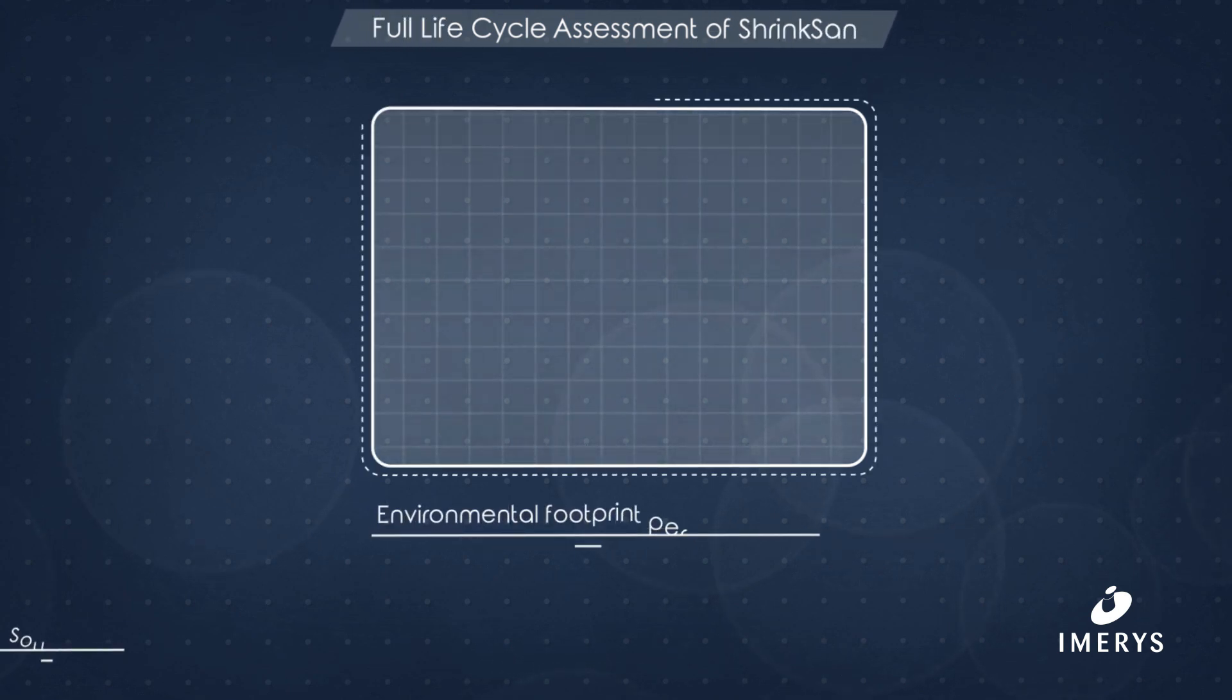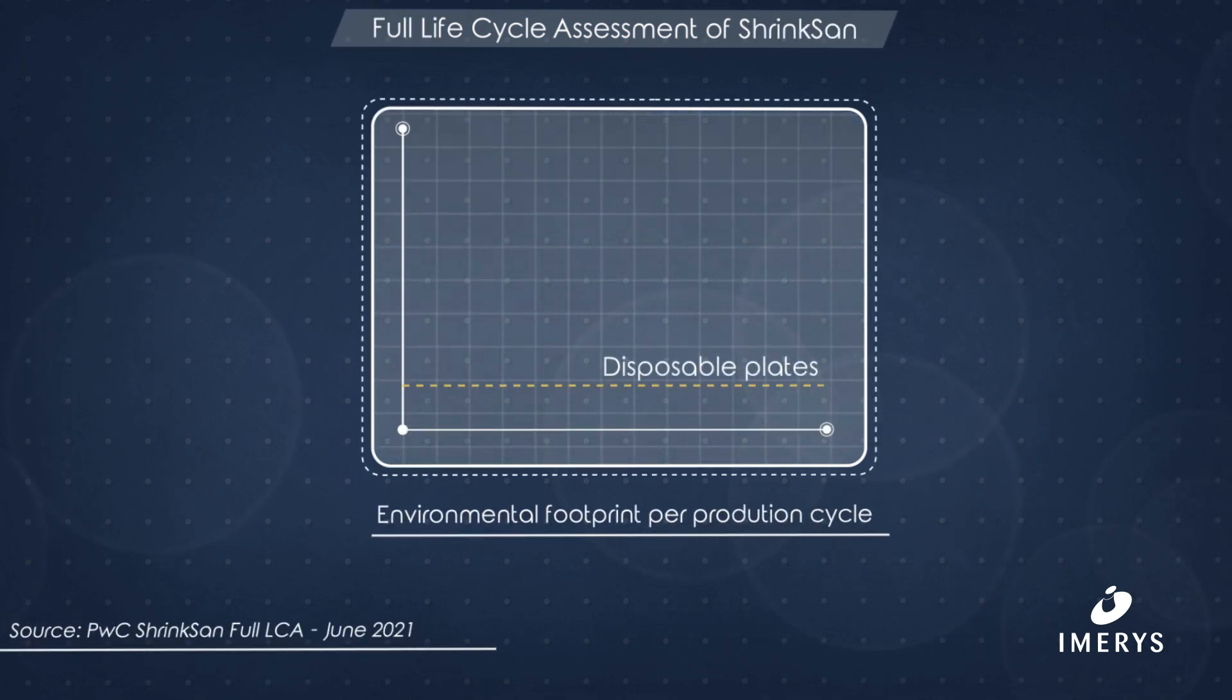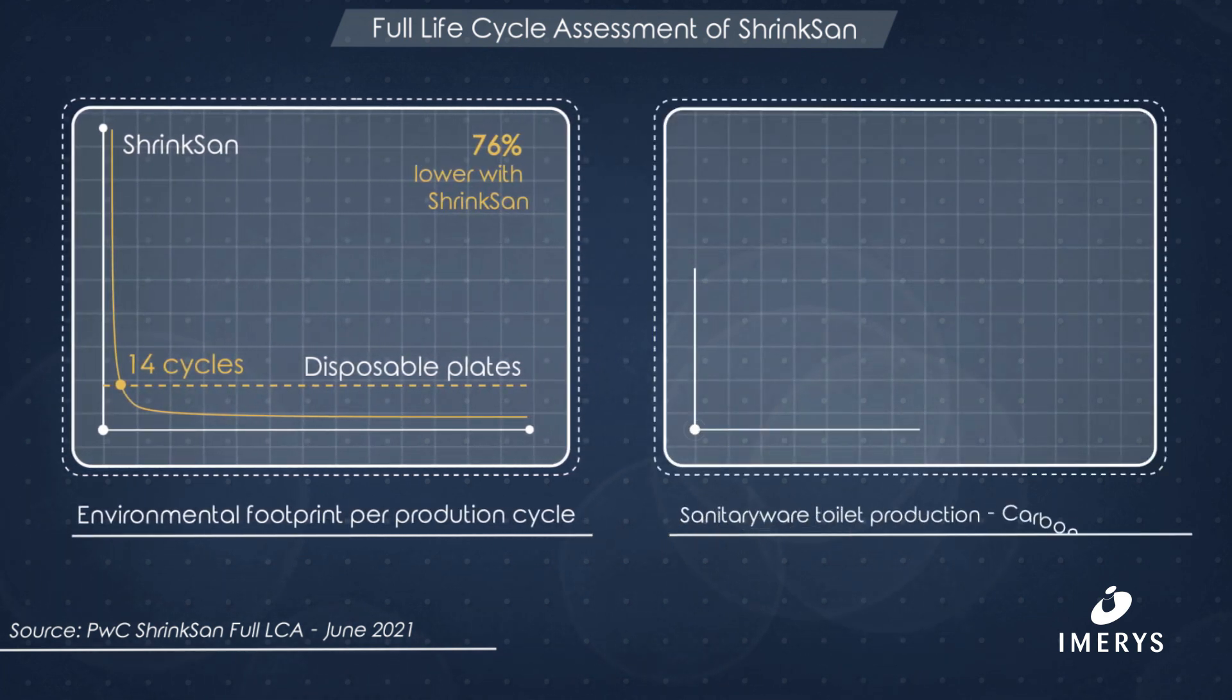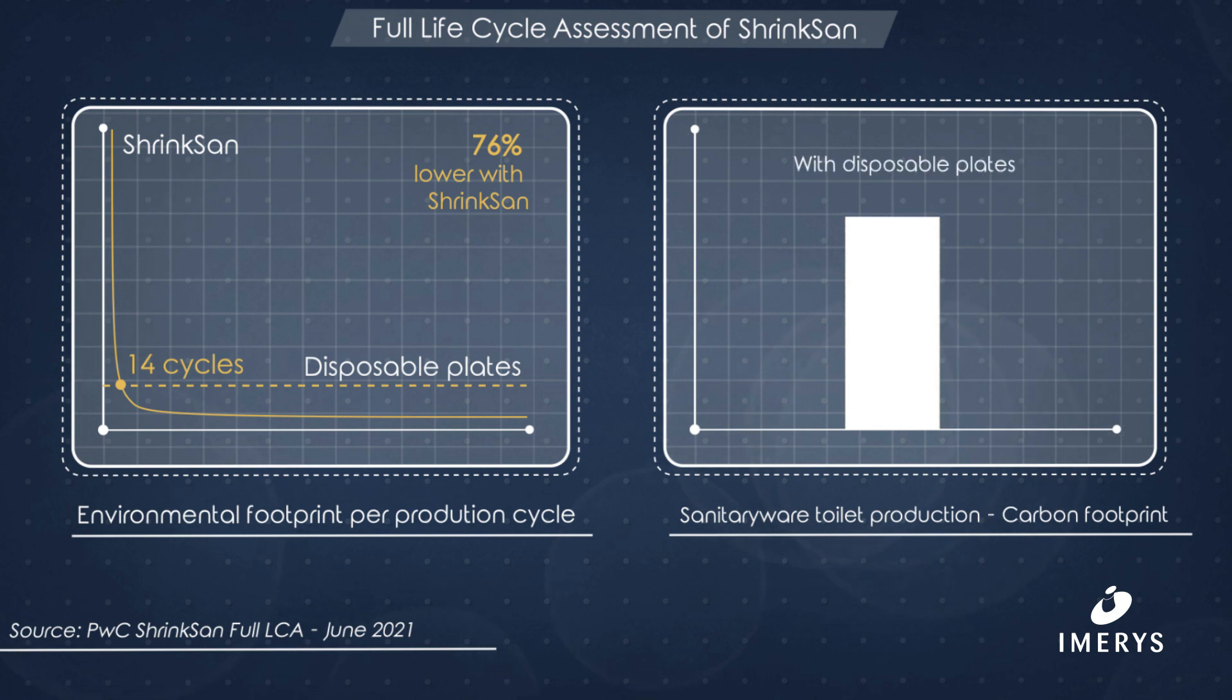A full life cycle assessment has been conducted with PWC and the results show that the CO2 generated is 76% lower with ShrinkSan compared to disposable plates. Using ShrinkSan would reduce the total carbon footprint of the ceramic toilet manufacturing by 6%.